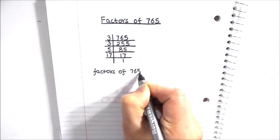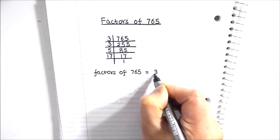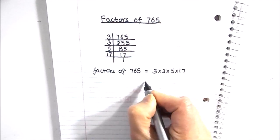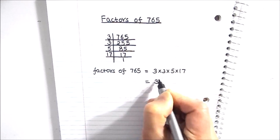So the prime factors or the factors of 765 are 3 times 3 times 5 times 17, or in exponential form we can write it as 3 square times 5 times 17.